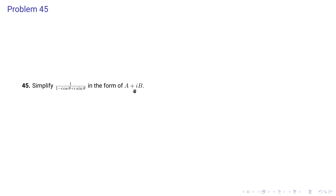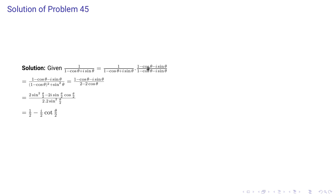Problem 45: simplify 1/(1 - cosθ + i sinθ) in the form a + ib. Multiply and divide by the complex conjugate (1 - cosθ - i sinθ). The denominator becomes (1-cosθ)^2 + sin^2θ = 1 - 2cosθ + cos^2θ + sin^2θ = 2 - 2cosθ. Using half-angle identities: 1 - cosθ = 2sin^2(θ/2) and sinθ = 2sin(θ/2)cos(θ/2), the first term cancels to 1/2 and the imaginary part becomes -i cos(θ/2) / (2 sin(θ/2)).